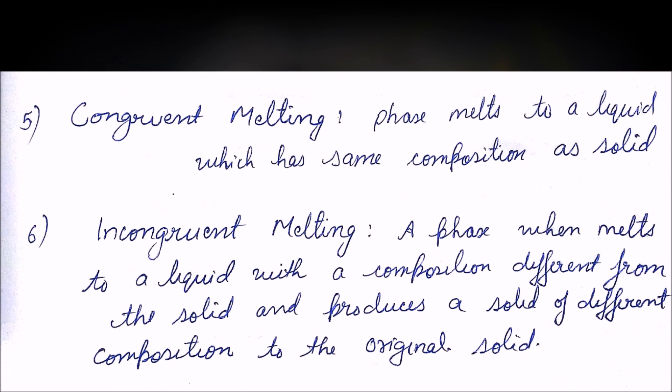There are two types of melting. Congruent melting is simple melting in which a solid phase melts into a liquid that has the same composition as the solid. Incongruent melting is where a phase melts to a liquid with a composition different from the solid phase and produces a different solid — so the original solid melts and when it re-solidifies the composition is not the same as the original.